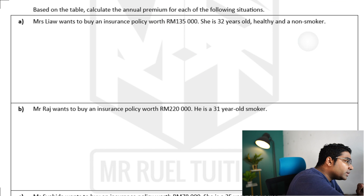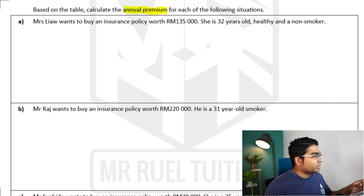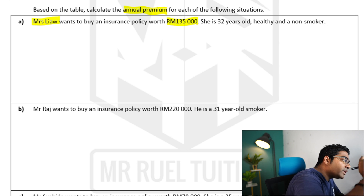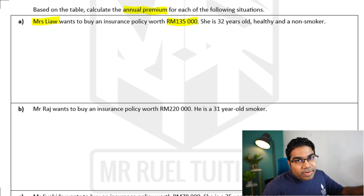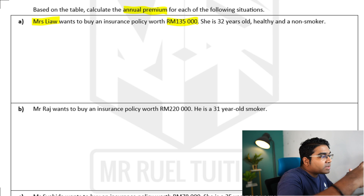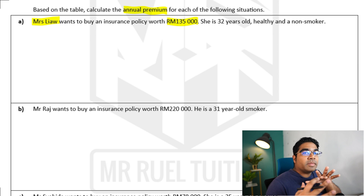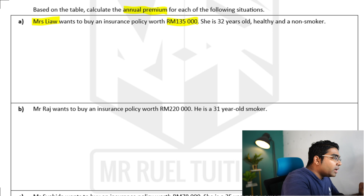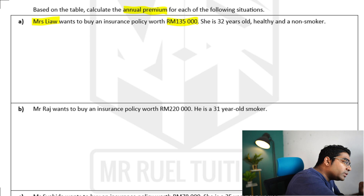Based on the table, calculate the annual premium for each of the following situations. Mrs. Liao wants to buy an insurance policy worth RM135,000. This represents the face value — the amount that will be passed down to the family members in case something were to happen to Mrs. Liao. She is 32 years old, healthy and a non-smoker.